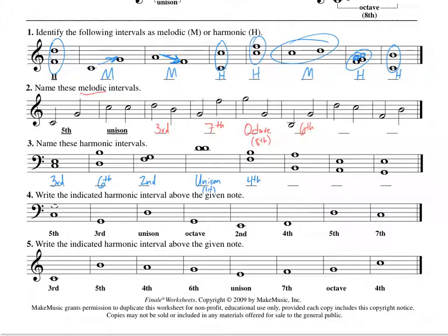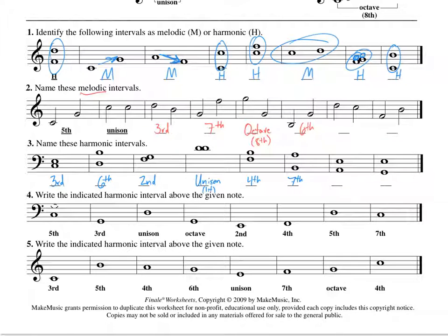We'll do one more and I'll let you do the last two. One, two, three, four, five, six, seven. B to B would be an eighth, and down one note to the A makes it a seventh. So here we're going to write seventh. I want you to do the last two on your own — as a matter of fact, I'm going to highlight them for you so you know you need to do them.